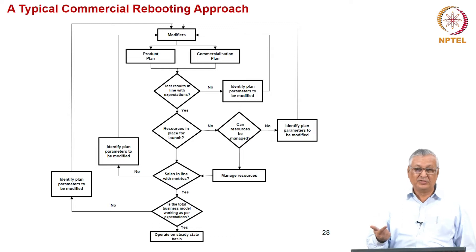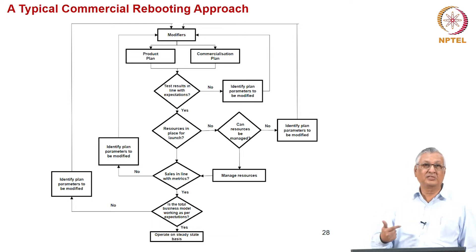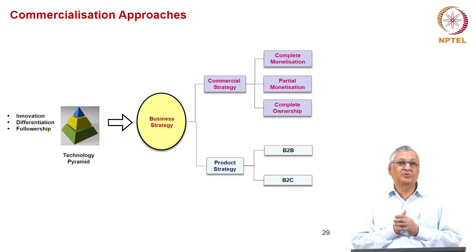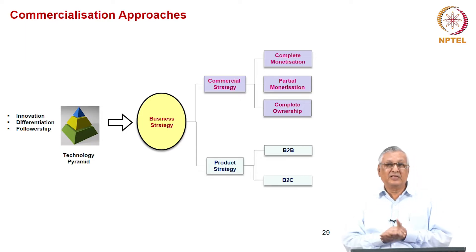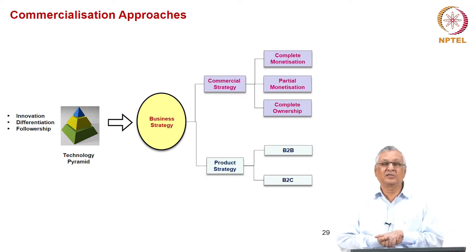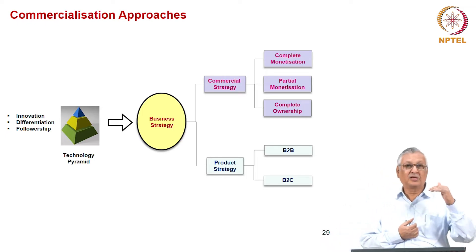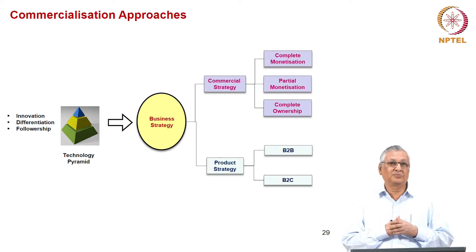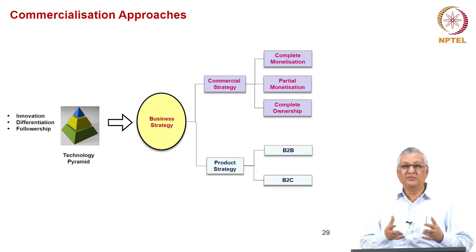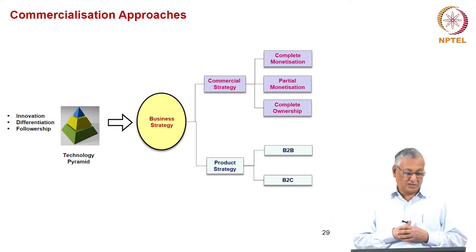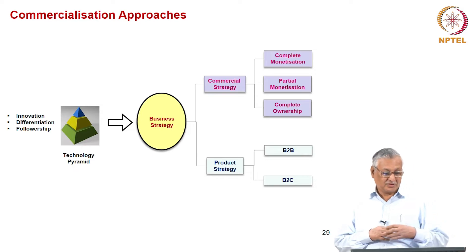Anything which improves sales is welcome for a startup. There are three types of technological endeavors possible: first is innovation — a completely innovative product, first time ever; second is differentiation; and third is followership. Followership does not mean it is not innovative — it is creative in its own way, probably providing much better cost efficiency and quality even if the product is similar. The technology pyramid determines what kind of business strategy you have.